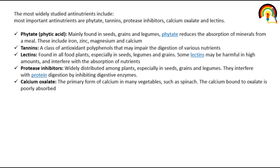Phytate means phytic acid. It is mainly found in seeds, grains, and legumes. Phytate reduces the absorption of minerals from a meal — including iron, zinc, magnesium, and calcium.